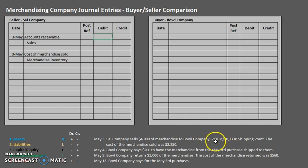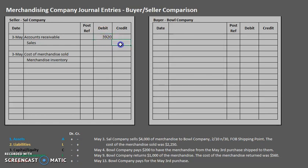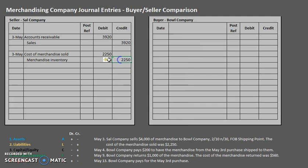The 2/10 net 30 means a 2% discount if paid within 10 days; regardless, the total amount must be paid within 30 days. We are going to assume at all times that the buyer is going to exercise the discount. So the $4,000 sale gets a 2% discount — that's $80 off — so the total amount we expect to receive is $3,920. The cost of merchandise sold does not get a discount, because we are recording what we originally paid for the merchandise: $2,250.